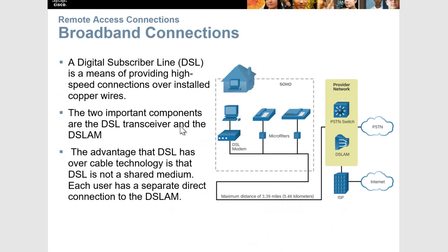DSL uses high-speed connections installed over copper wires. There is a maximum distance of about 3.39 miles between your DSL modem and the DSLAM on your provider's end, which you need to be within for DSL to perform optimally. The DSLAM combines individual DSL connections from users into one high-capacity link to the ISP and the internet. Your advantage over cable is that cable is a shared medium and DSL is not, so other people on the network won't affect your performance.